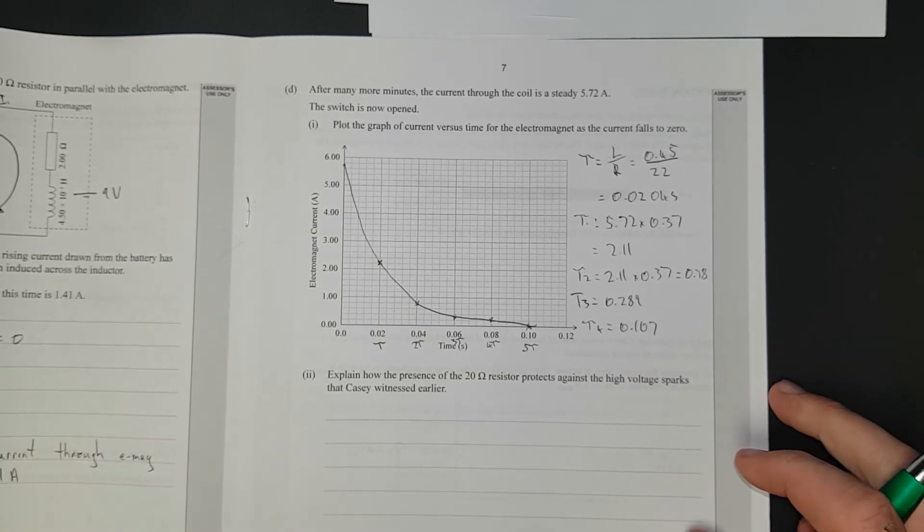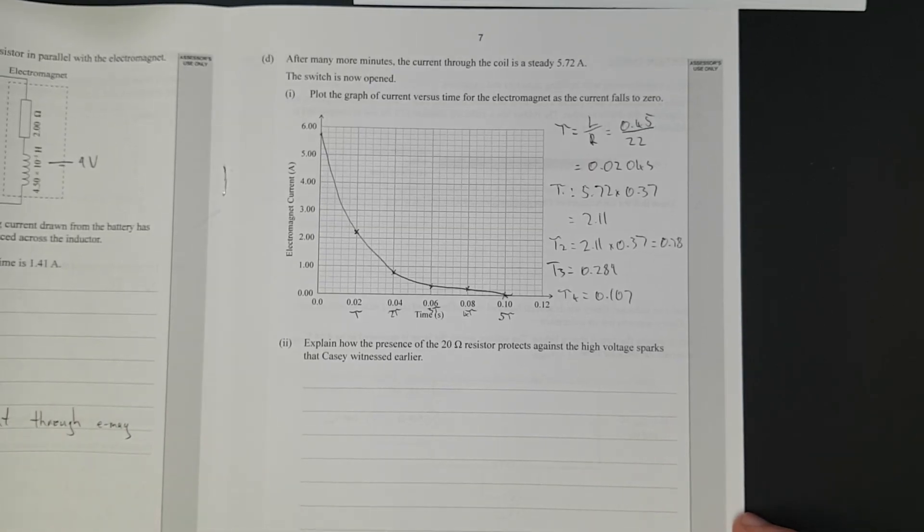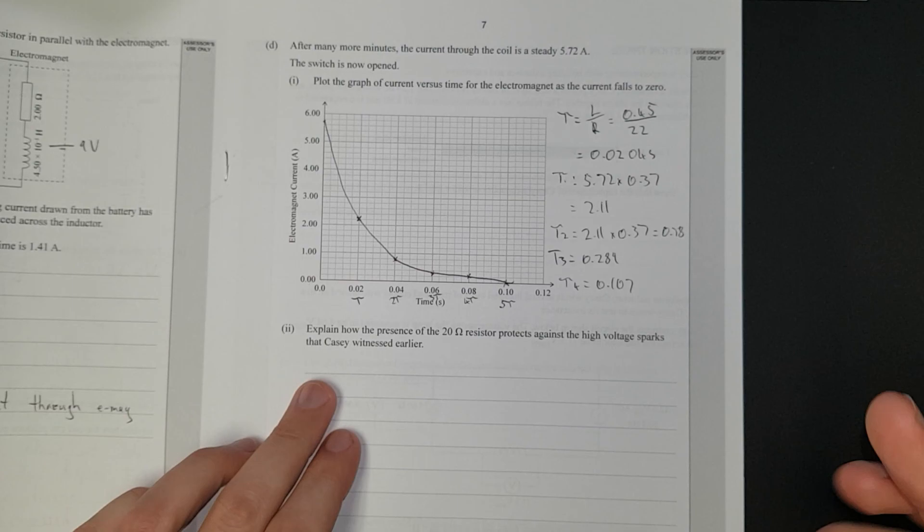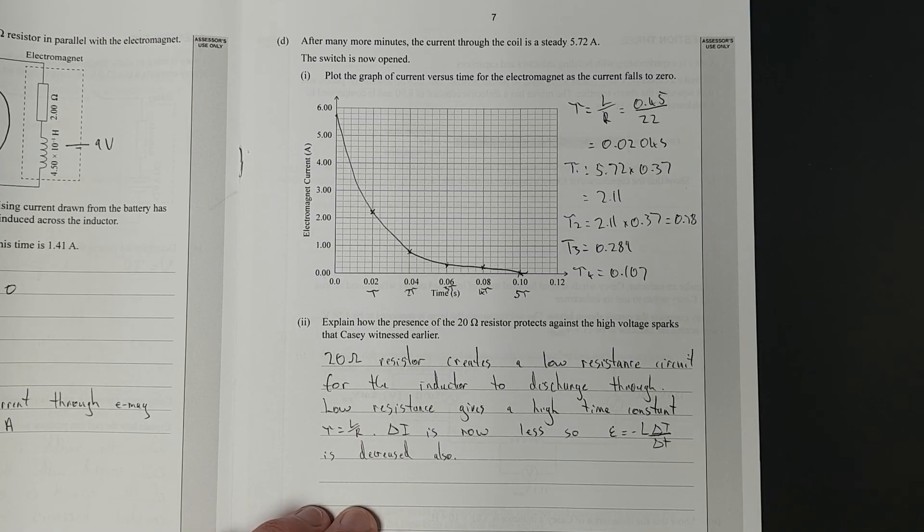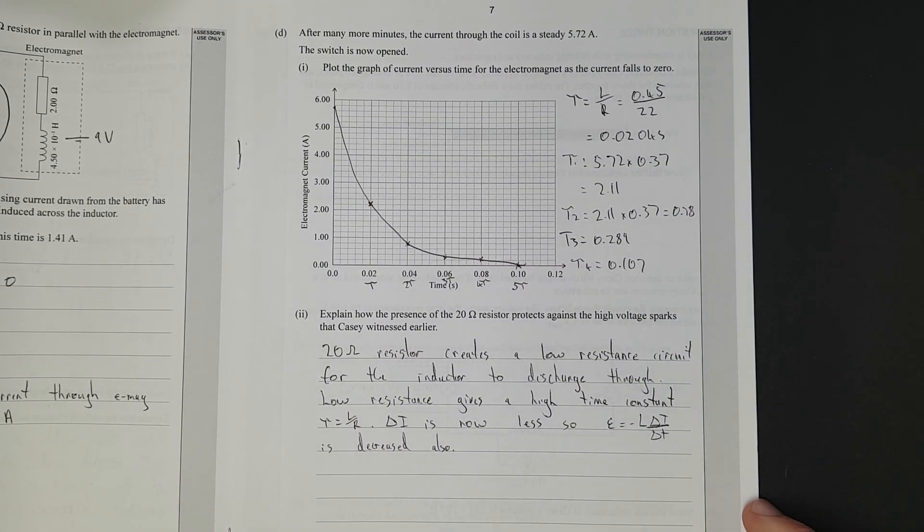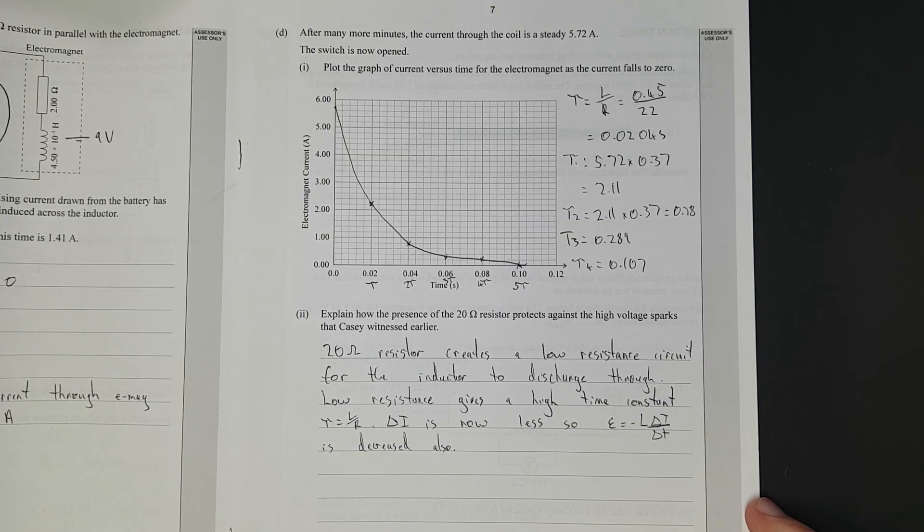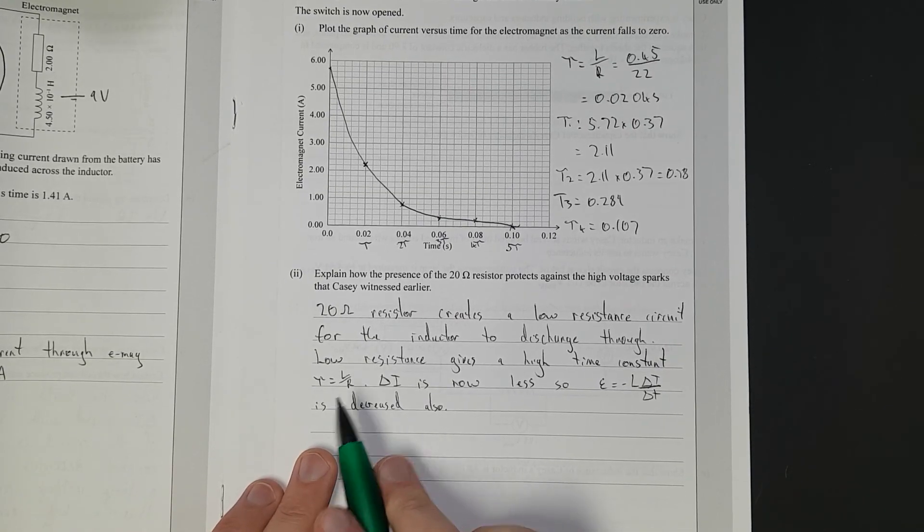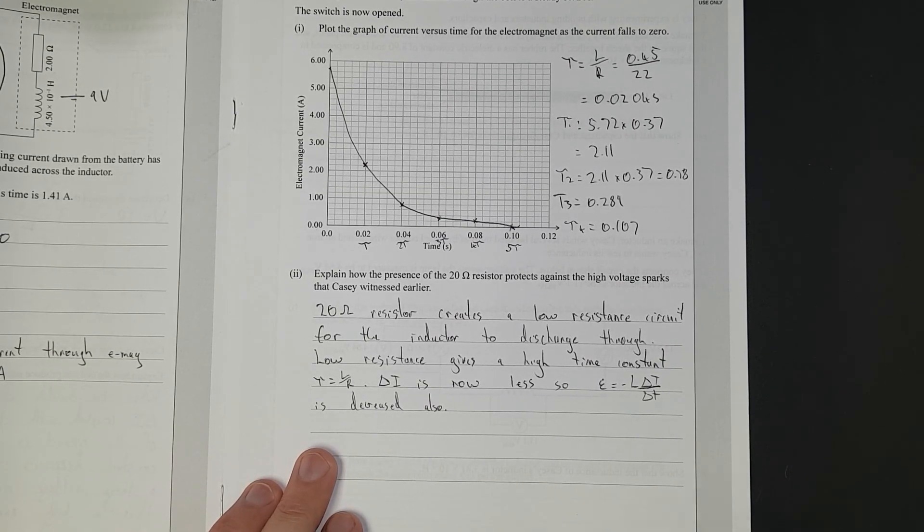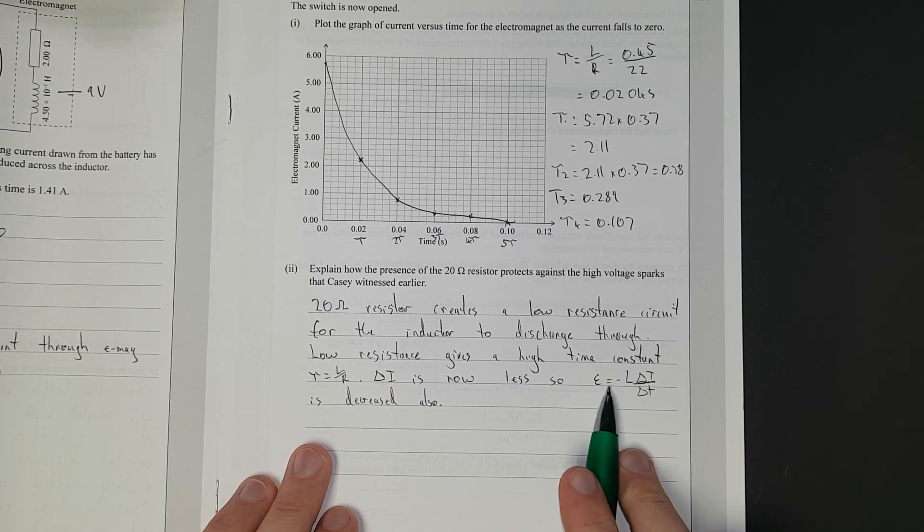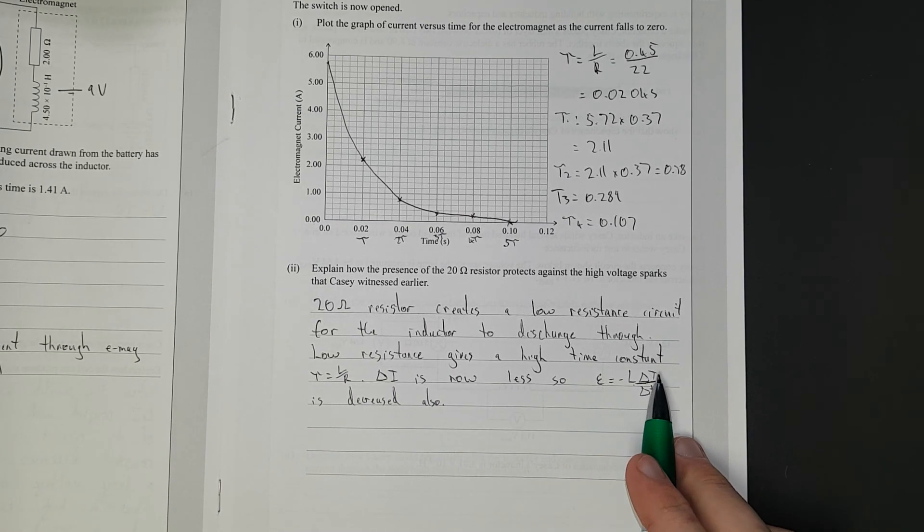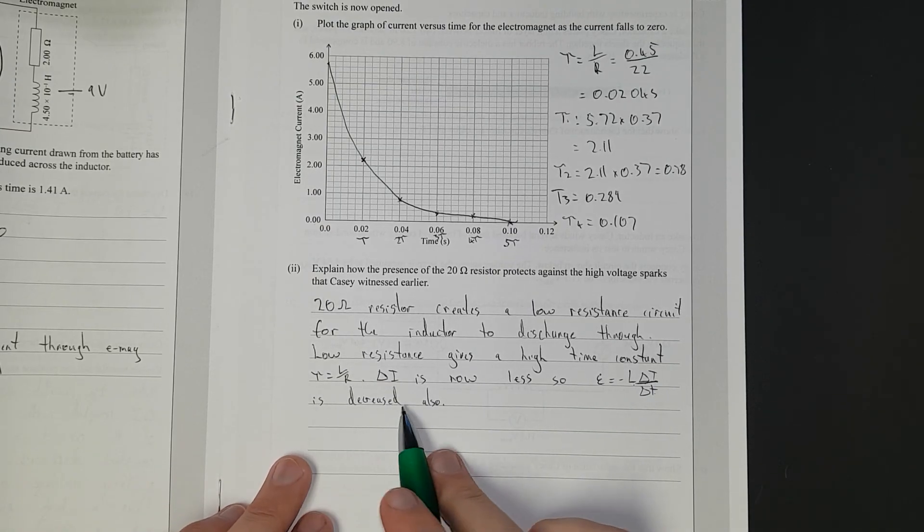Explain how the presence of the 20 ohm resistor protects against high voltage sparks. So I'm going to pause it, write the answer, and then discuss. I've said, 20 ohm resistor creates a low resistance circuit for the inductor to discharge through. Low resistance gives a high time constant, because time constant is the inductance divided by the resistance. The change in current's now less, so the EMF across the inductor, which is equal to the change in current divided by the change in time, has decreased also.